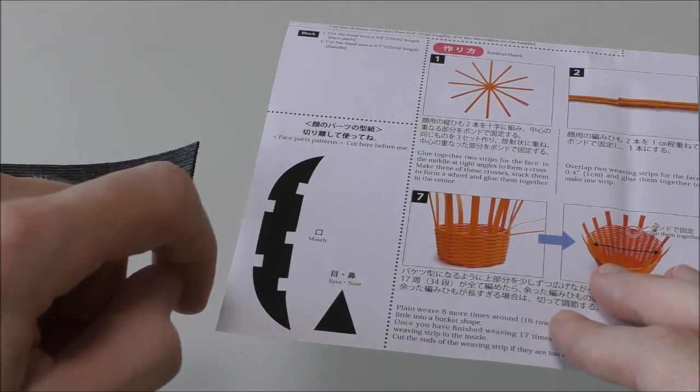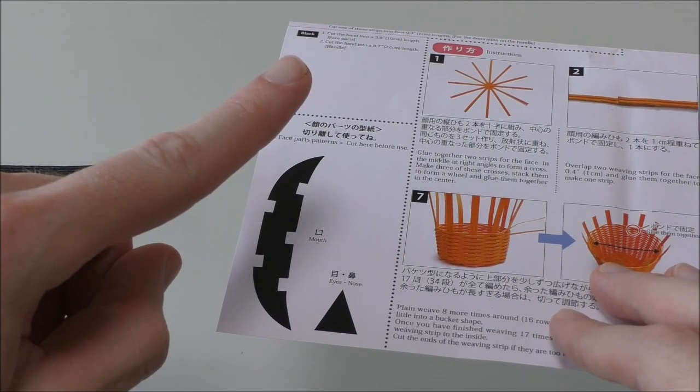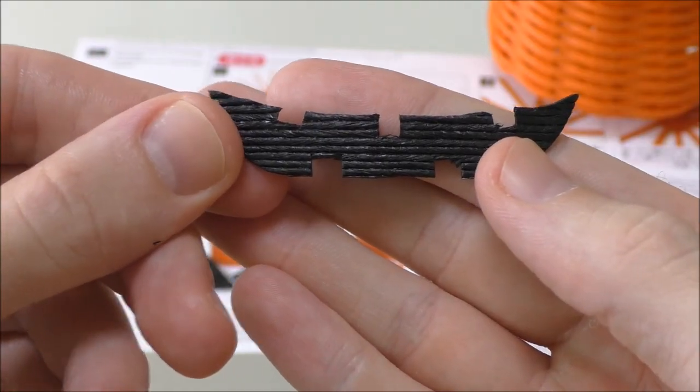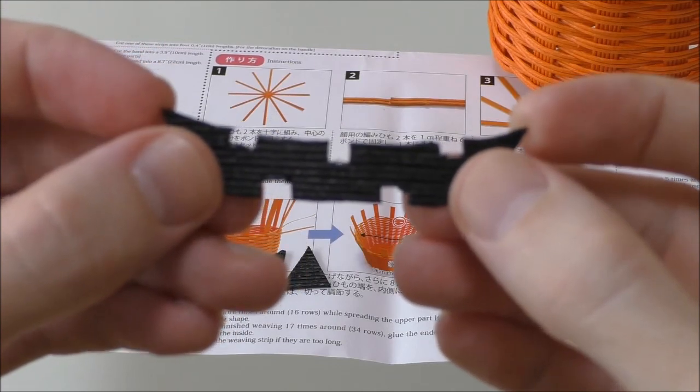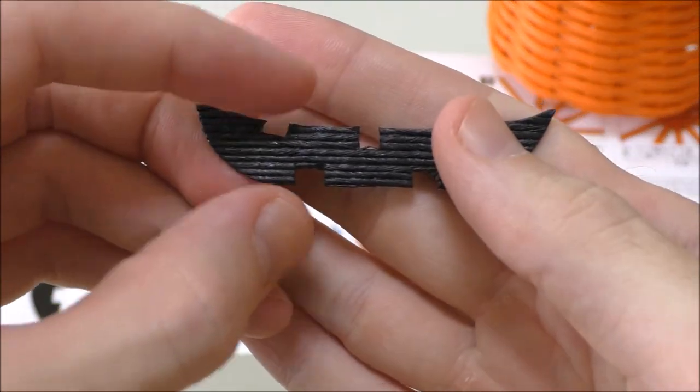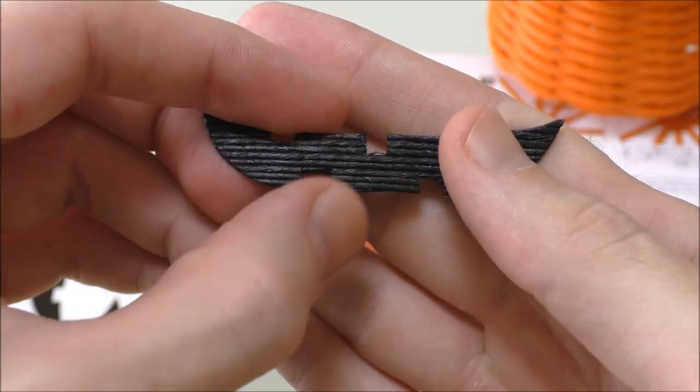I don't have a white chalk pencil but I will find a solution to this problem. After some trial and error I did manage to cut the mouth out. It is six and a half centimeters long and eleven of the individual threads wide.